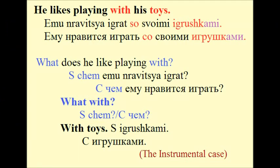He likes playing with his toys. Ему нравится играть со своими игрушками. Here we have the noun with a preposition — с игрушками. Sometimes we add one letter to the initial preposition, which is why it's written as со. Our noun игрушками has the ending -ами, which means first it's a plural form, and second, this is the instrumental case, because only in the instrumental case can we find the ending -ами.